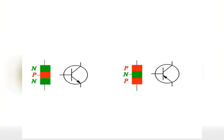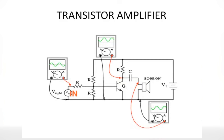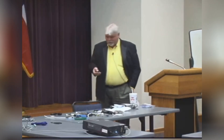Here is a transistor amplifier. We've got our signal coming in, we've got a bias. The signal is going to the base of the transistor. Current flows up through the emitter, through the collector, through this resistor. DC is decoupled and the speaker is driven. One battery supplies the whole thing.